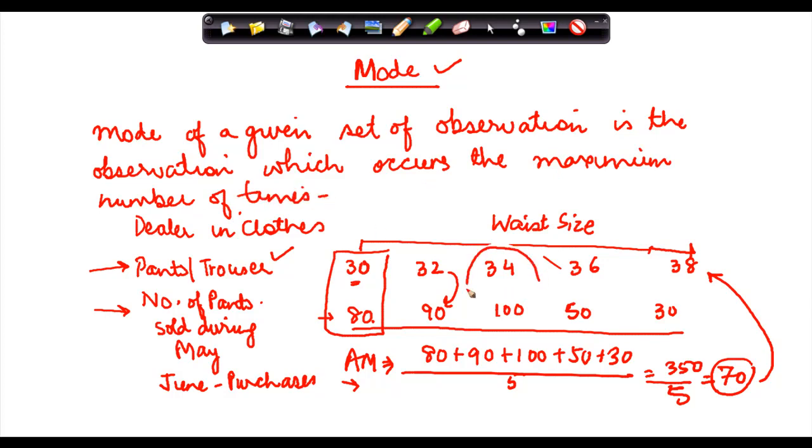So here I saw that 34 waist size is the one which is sold the maximum number of times. And therefore, the mode of this data is 34. So mode of a given set of observation is the observation which occurs the maximum number of times.